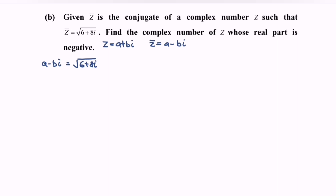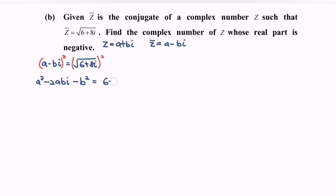Now square both sides and rewrite the situation. We get a squared minus 2abi minus b squared, and this equals 6 plus 8i.